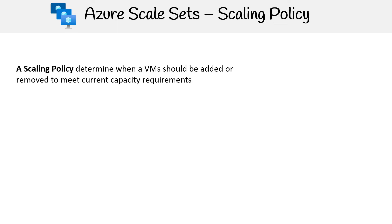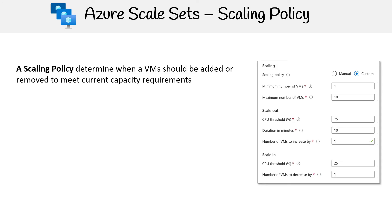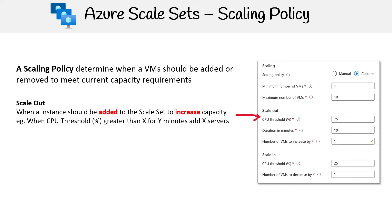Let's take a look at scaling policies, which determine when a virtual machine should be added or removed to meet current requirements. There's a wizard you see when you're creating a scale set initially with very simple features. Let's focus on two things: scaling out and scaling in. Scaling out is when an instance should be added to a scale set to increase capacity.